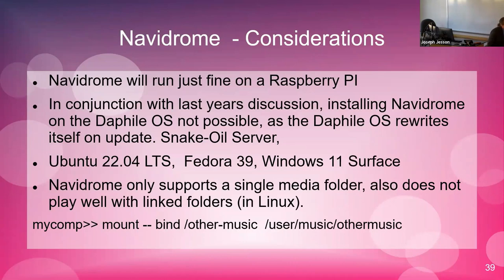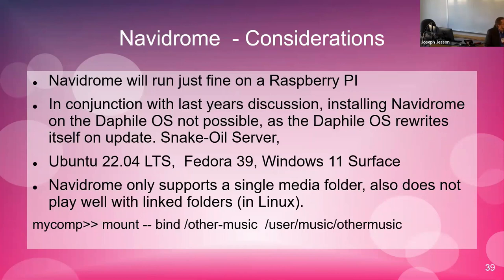Regarding DatFile, which I mentioned from last year's talk — it doesn't run on the DatFile server. DatFile as an OS rewrites the whole operating system when it updates, so it would see Navidrome as an invader and delete it. I have so far installed it on Ubuntu 24, Fedora 39, and Windows 11, and it works great on all of them.